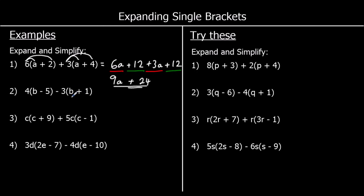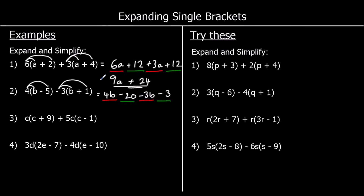The second one: 4 times b is 4b. 4 times a negative 5 is going to be negative, and 4 fives are 20, so negative 20. Negative 3 times b is negative 3b. And negative 3 times positive 1 is negative 3. So we've got 4b take away 3b, which is 1b — just written as b. And negative 20 take away 3 is negative 23. So b minus 23.